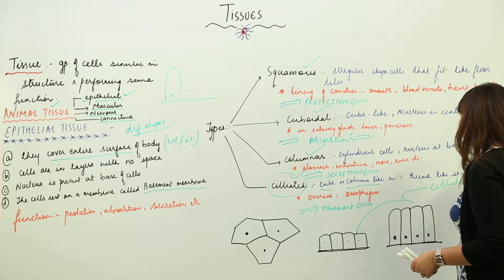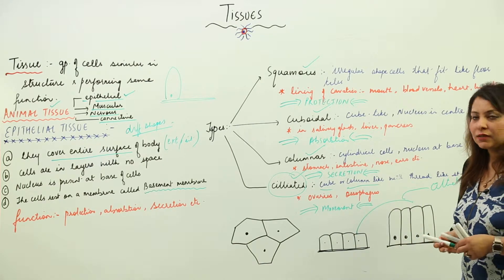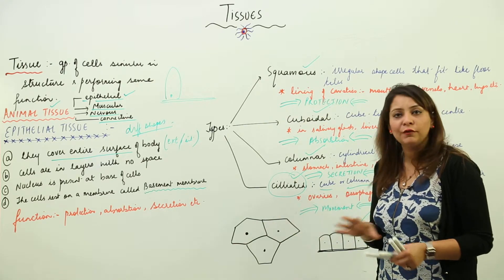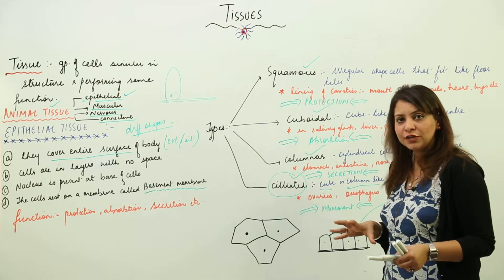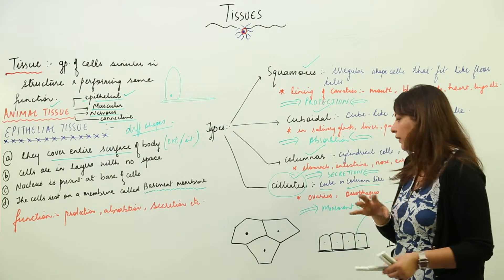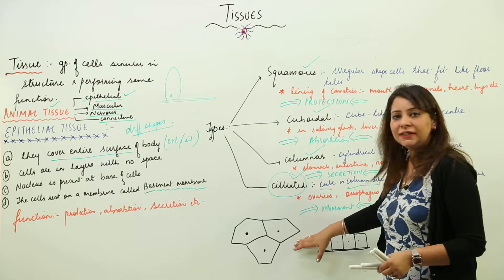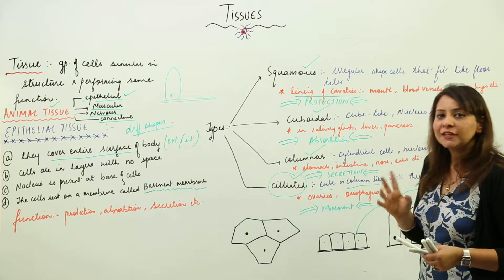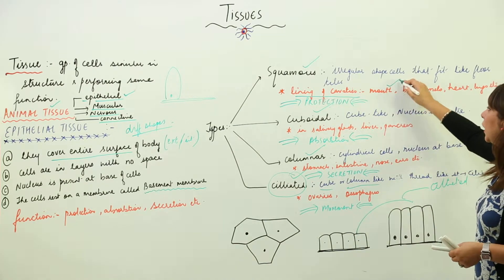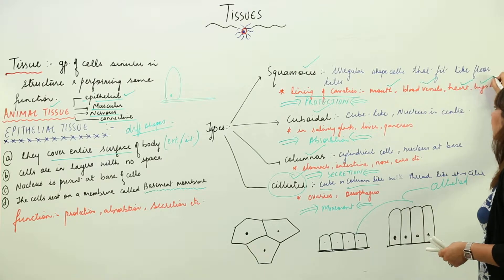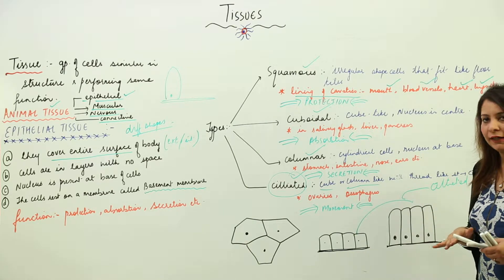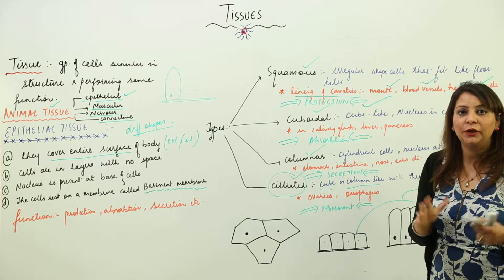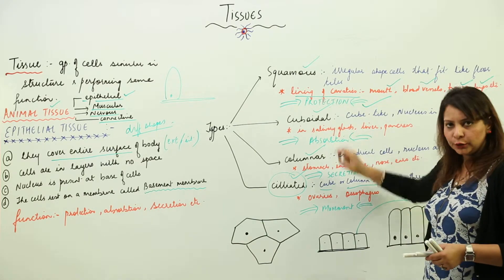Squamous cells are arranged like floor tiles with no space between them. They form the lining of cavities — which are hollow spaces — such as the mouth, blood vessels, heart, and lungs. Wherever there is a cavity, squamous epithelium forms the inner lining. Their function is protection of the part where they are present.